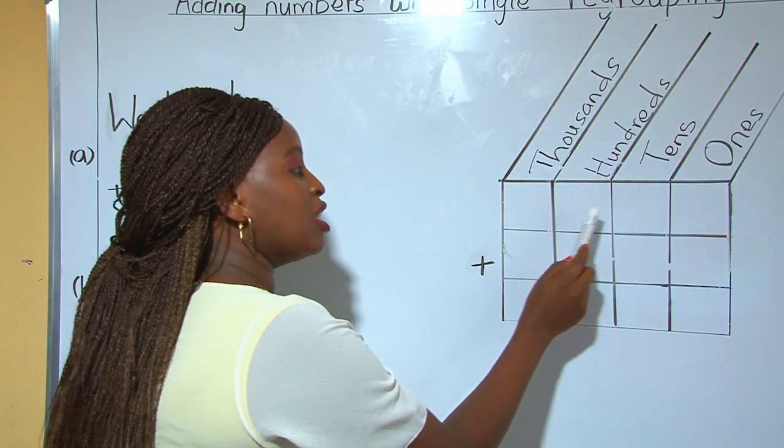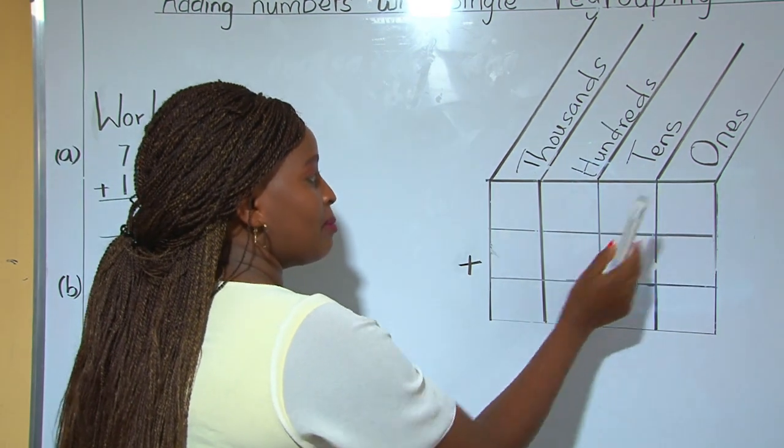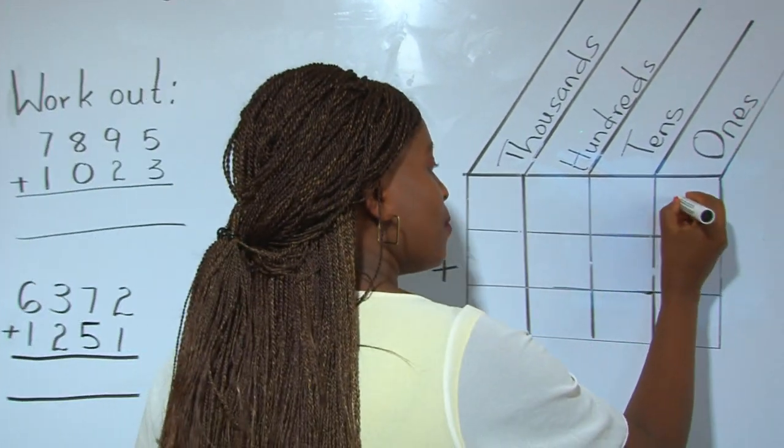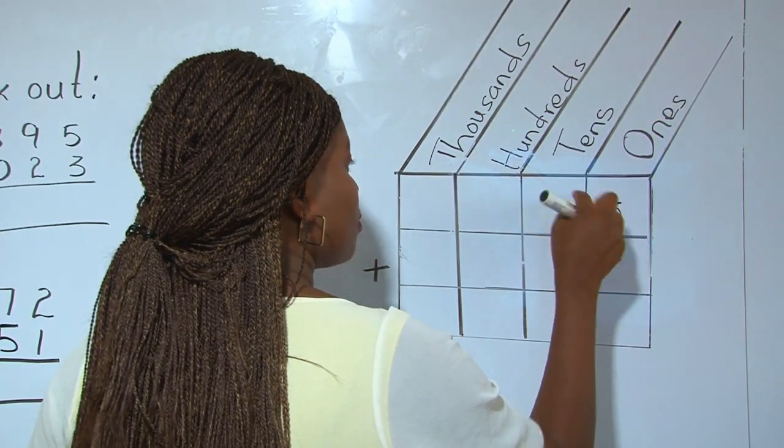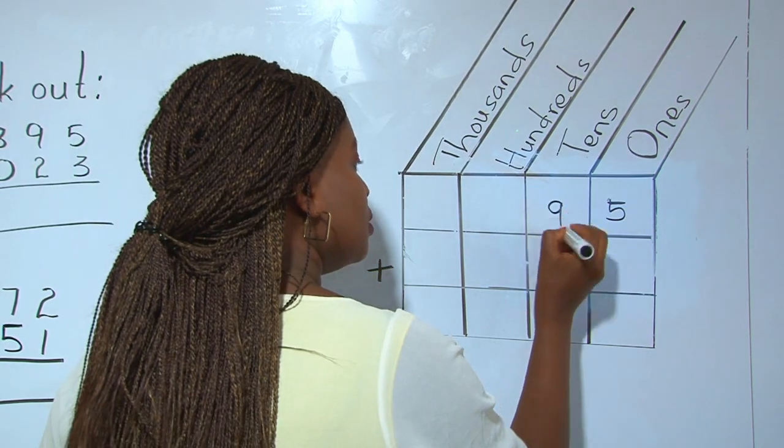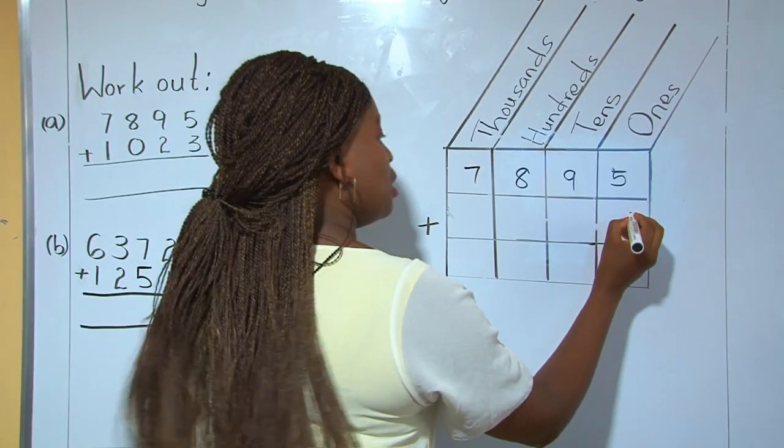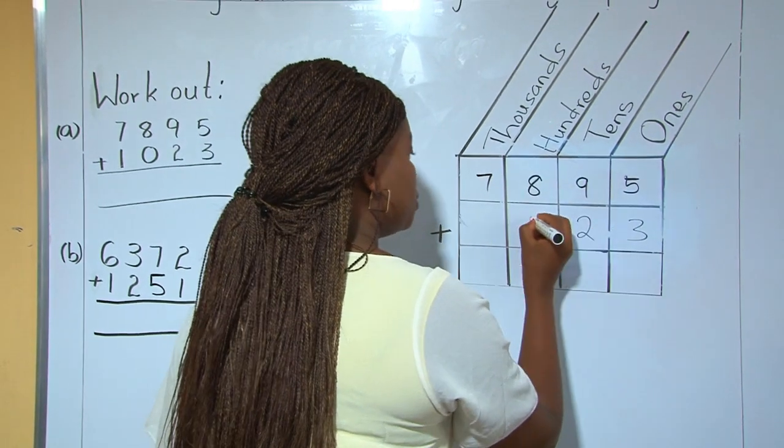You list down the respective digits in these boxes, beginning with the ones place value. So we have 5, then 3, then 2, then 1.